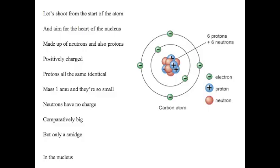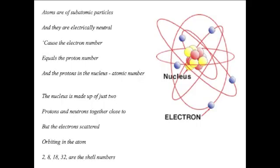Neutrons have no charge, comparatively big but only a smidge in the nucleus. Atoms are of subatomic particles and they are electrically neutral, cause the electron number equals the proton number and the protons in the nucleus, atomic number. The nucleus is made up of just two: protons and neutrons together close to.